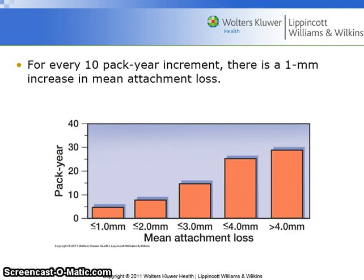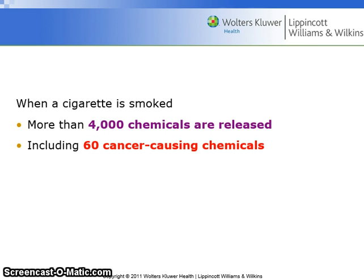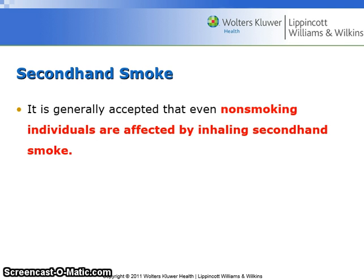The severity of attachment loss is directly related to cigarettes smoked per day and the number of years an individual has smoked. For every 10 pack-year increment, there is a 1 millimeter increase in mean attachment loss. When a cigarette is smoked, more than 4,000 chemicals are released, including 60 cancer-causing chemicals.